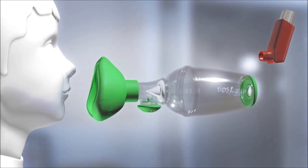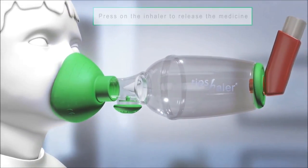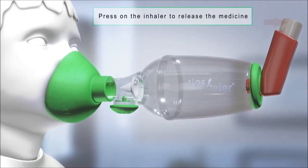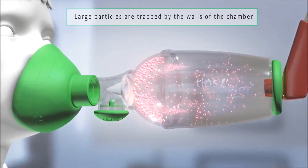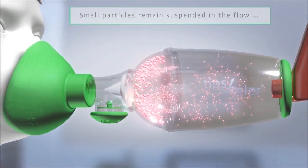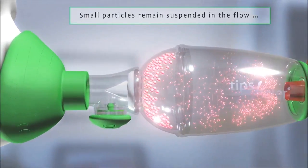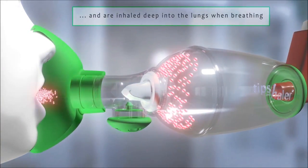Metered dose inhalers release particles of medication in the chamber in an aerosol form. Tipshaler walls quickly catch large particles and avoid impacting the mouth and throat. Meanwhile, small particles remain suspended in the flow. Selected through Tipshaler and its ISOBreath valve, small particles are inhaled deep into the lungs where their efficiency will be maximum.